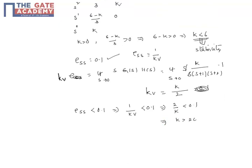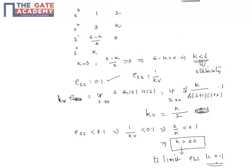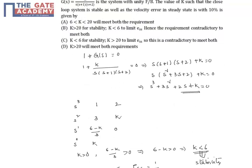K is greater than 20 to limit ESS to 0.1. Looking at the options, answer C states K is less than 6 for stability and K is greater than 20 to limit ESS equal to 0.1. This is contradictory because it's not possible to have K less than 6 and K greater than 20. Anyway, from the given options, answer is C, but it's contradictory to meet both parameters.